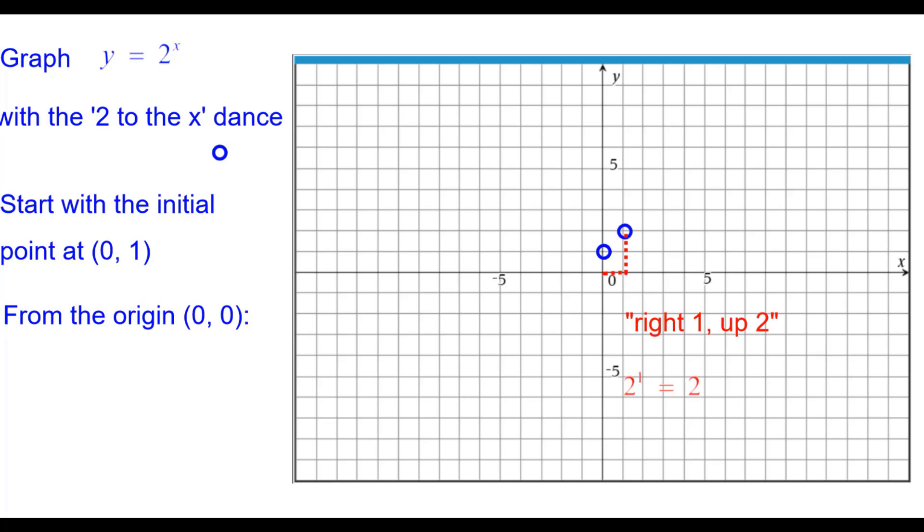From the origin, we will go right 1 up 2 because 2 to the 1st is 2. Right 2 up 4, 2 squared is 4. And right 3 up 8 because 2 to the 3rd power is 8.